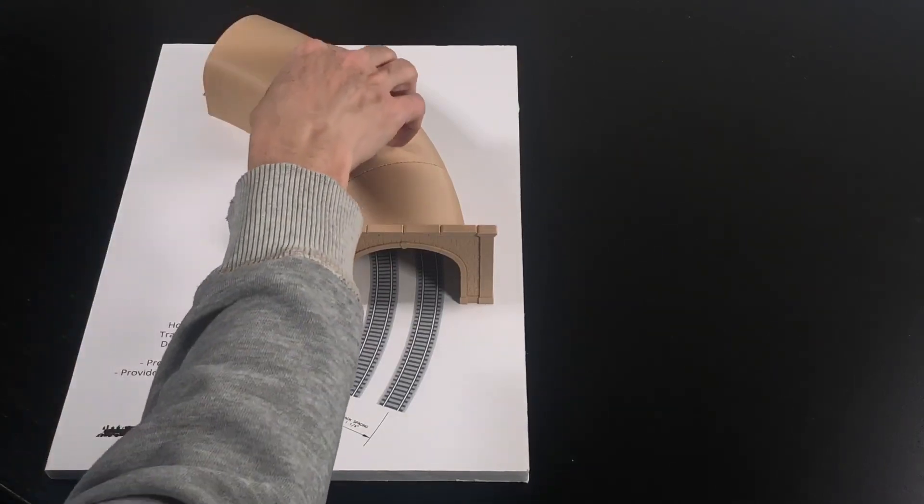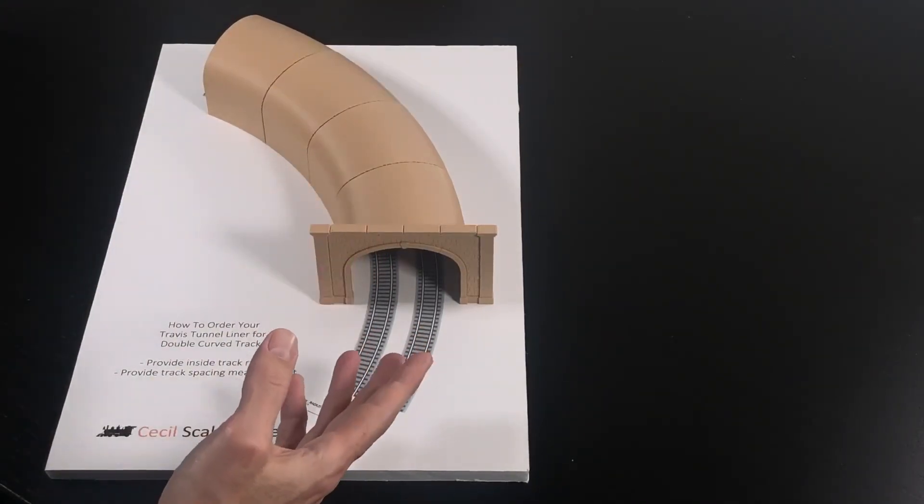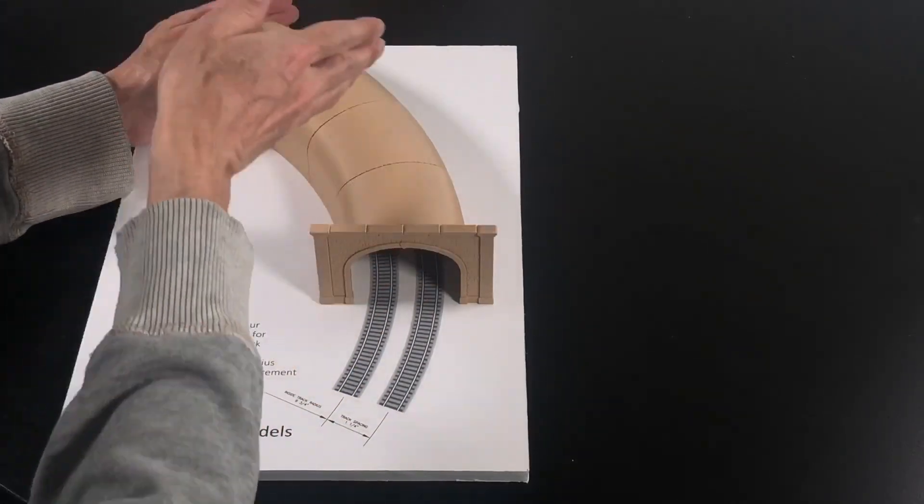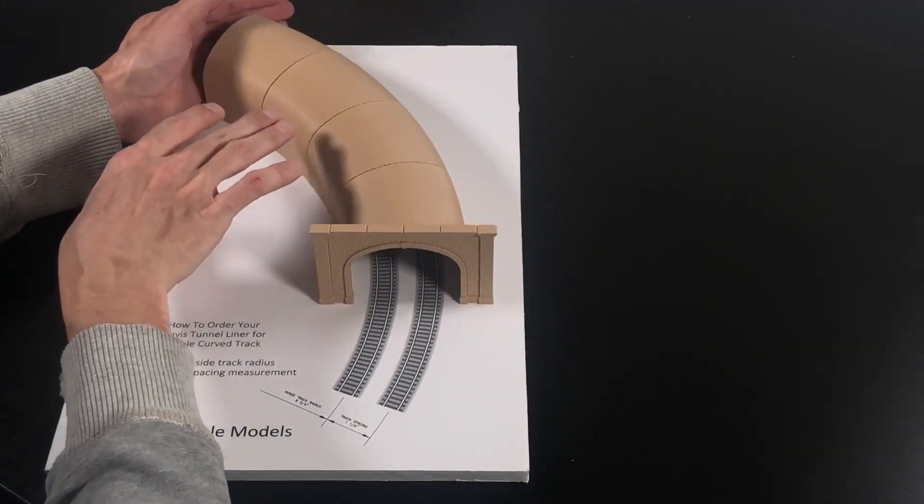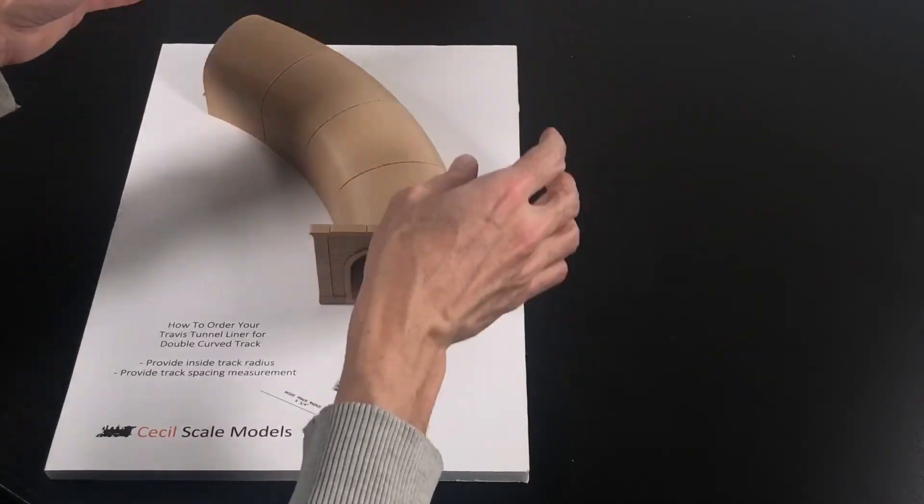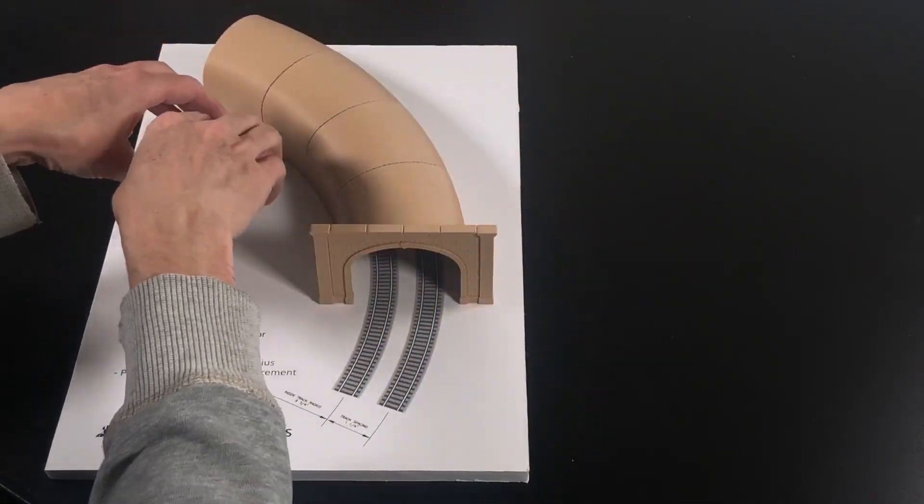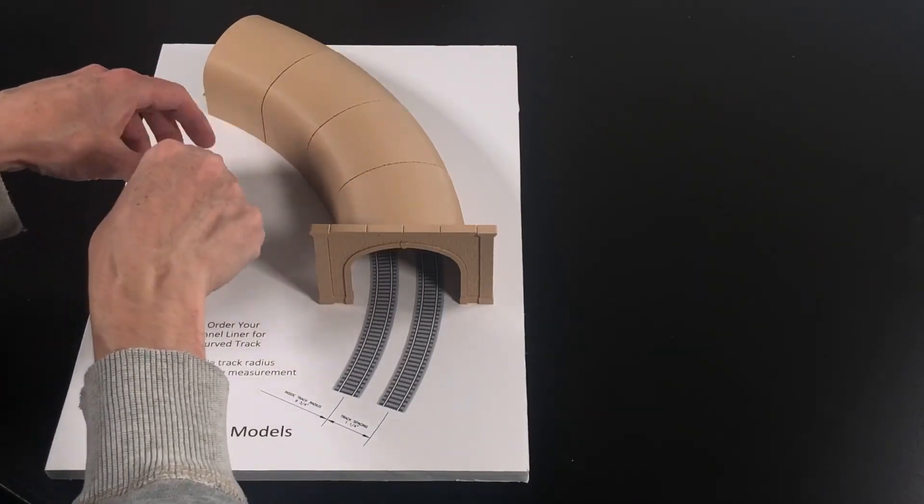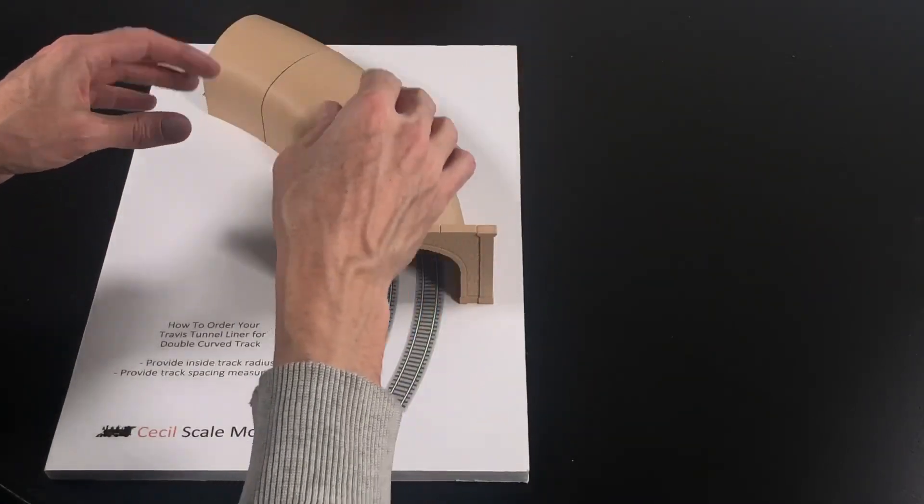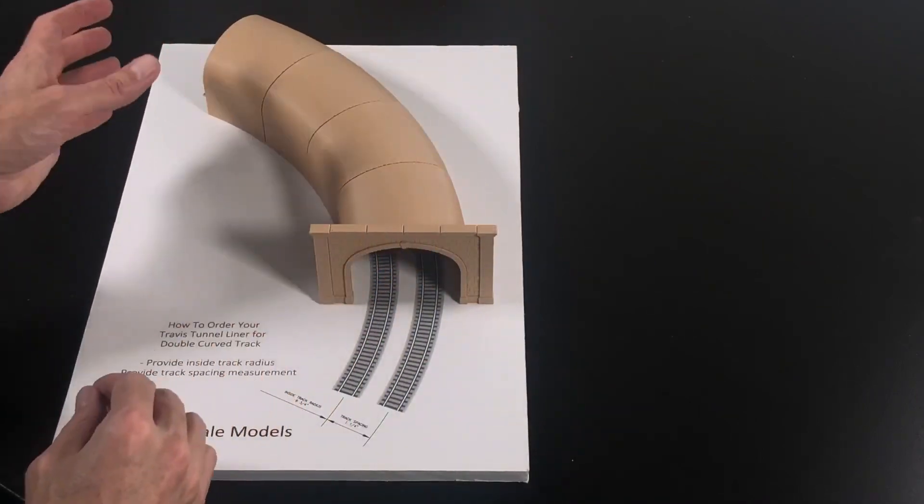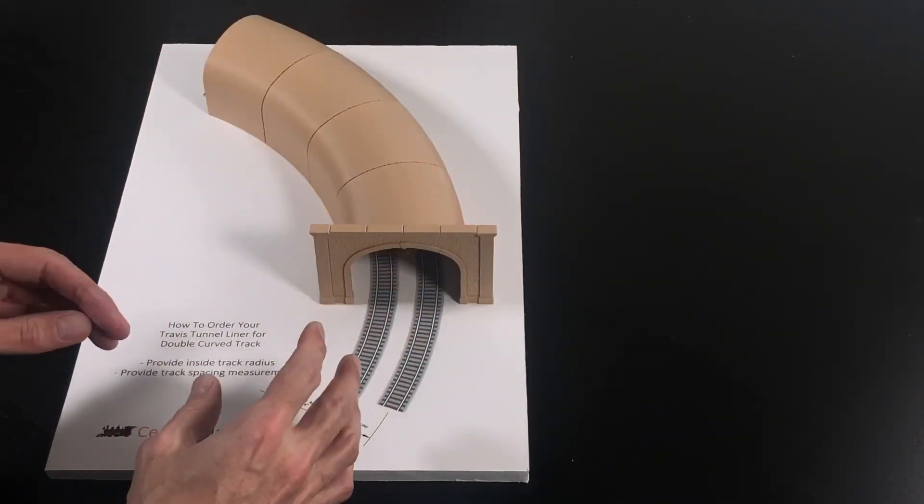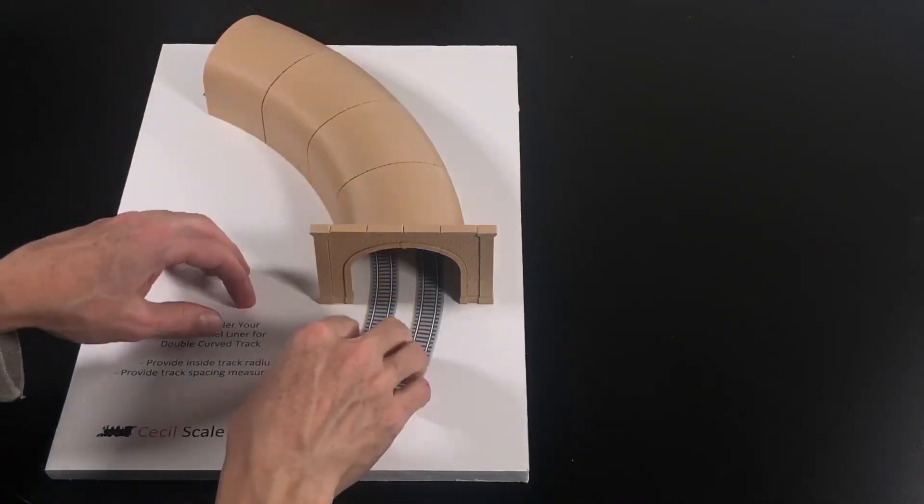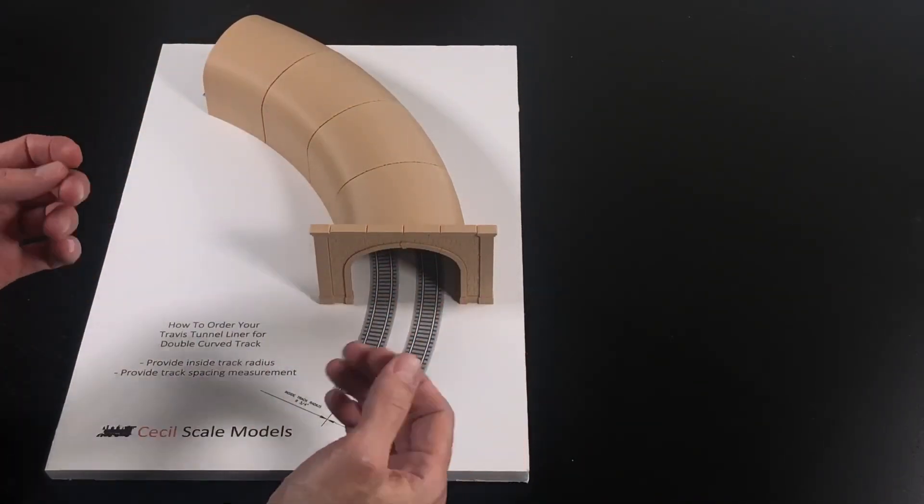So when we talk about this system helping you with your scenery construction, if we imagine that there's another tunnel portal here, this is your entire tunnel. You're building a mountain over this. Well, you can set this in place on the layout and immediately start building your scenery on top of it, whether it's cut up pink foam blocks and then plaster cloth on top of that, or crumpled newspaper and plaster cloth, sculpt a mold, whatever you're doing. You can place that on the layout and you can keep running your trains while you're doing your scenery construction.